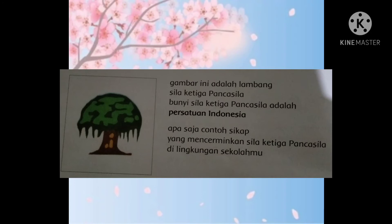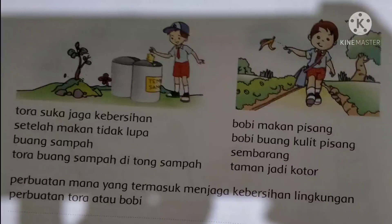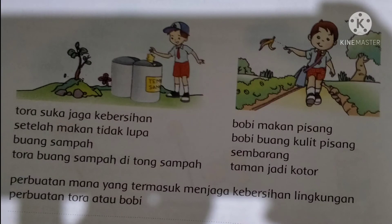Kemarin kita juga sudah belajar tentang ungkapan perintah. Di contoh gambar tersebut ada gambar Tora — Tora suka jaga kebersihan, setelah makan tidak lupa buang sampah di tong sampah. Ada juga gambar Bobby — Bobby sedang makan pisang, Bobby buang kulit pisang sembarangan sehingga taman jadi kotor. Perbuatan mana yang termasuk menjaga kebersihan lingkungan? Perbuatan Tora.